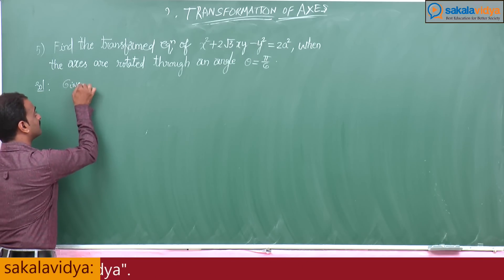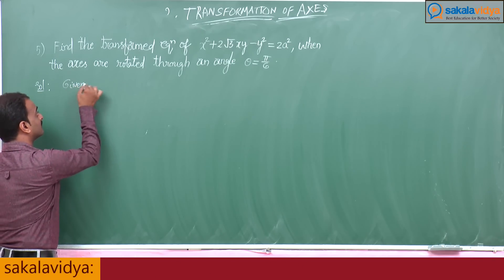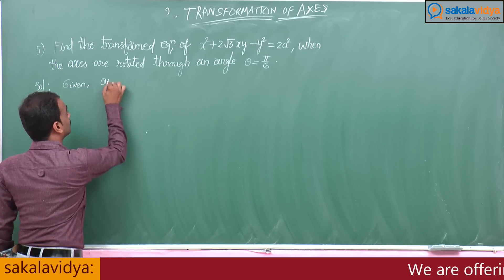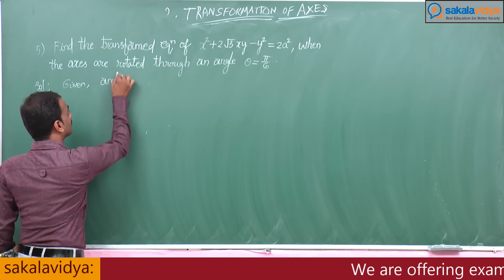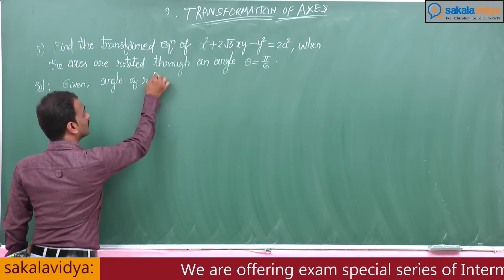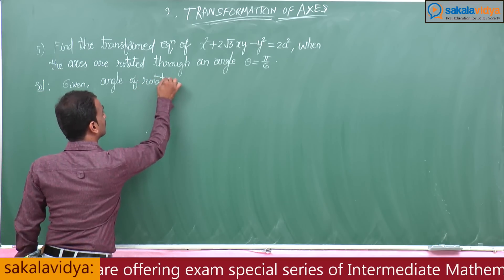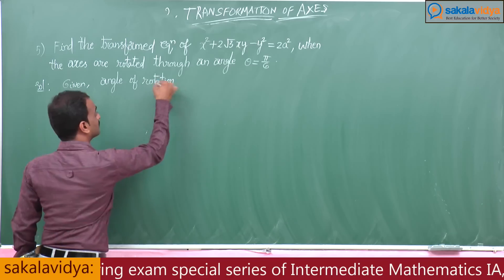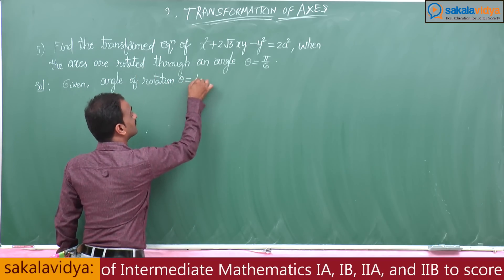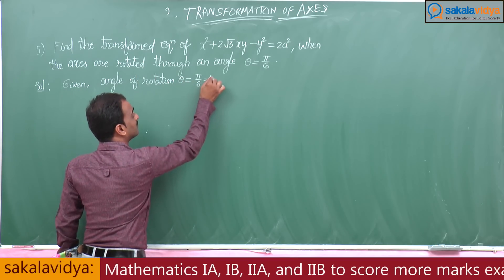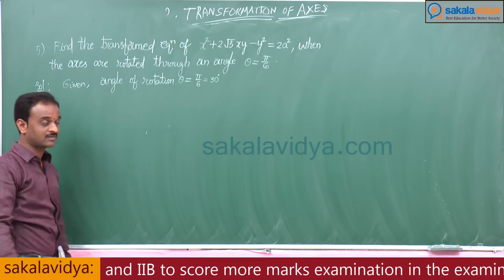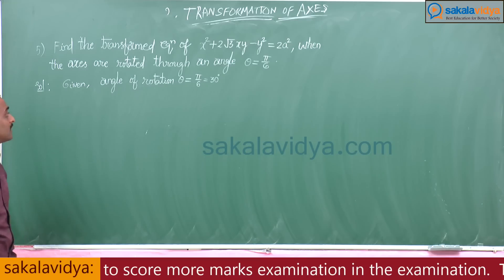Given that the angle of rotation theta equals pi by 6, which is nothing but 30 degrees. Pi by 6 equals 30 degrees.